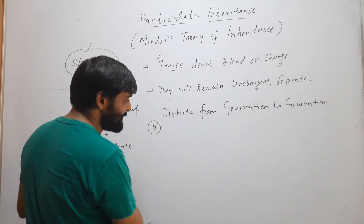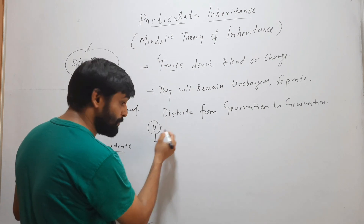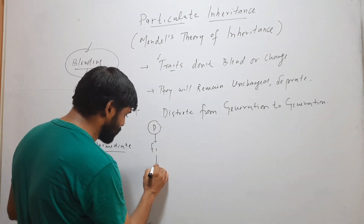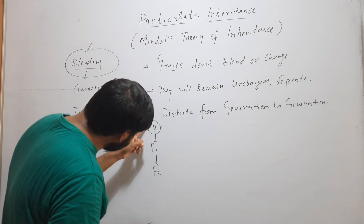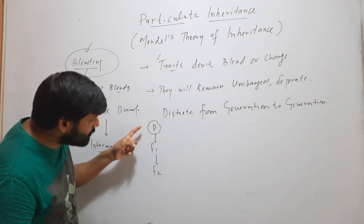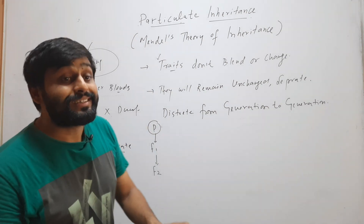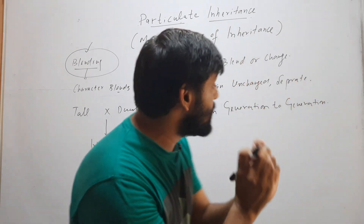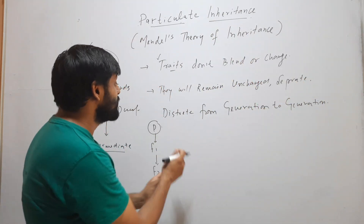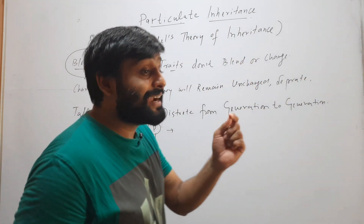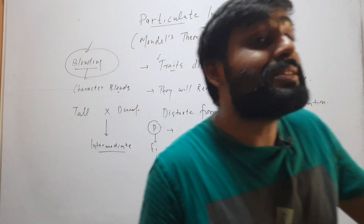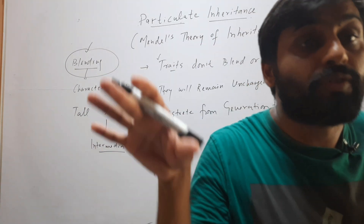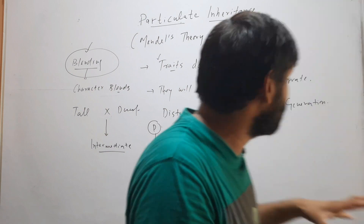Suppose this is the parental generation and we cross between parents. We get F1, then F2. From the parental generation to F1 to F2, traits will not change — they will remain the same, as they are. So traits retain their integrity and will not change from generation to generation.